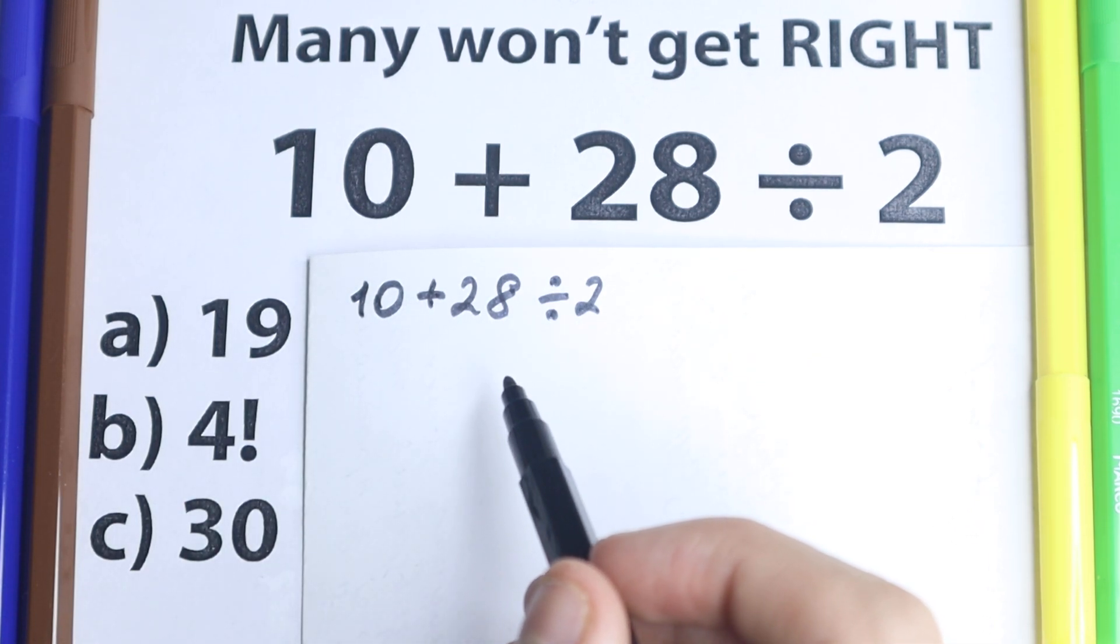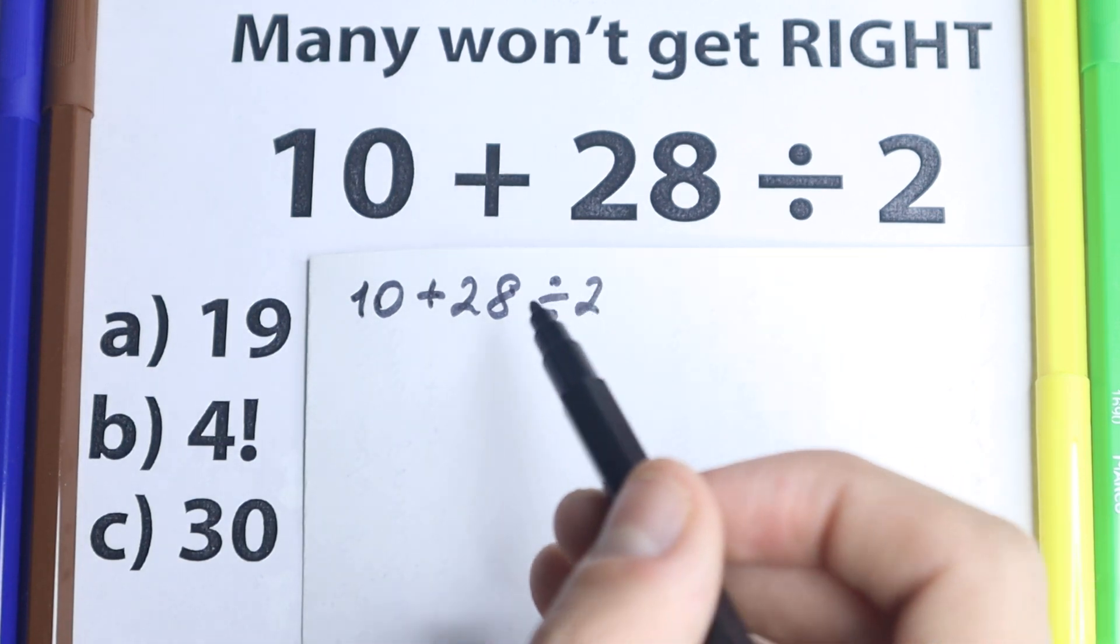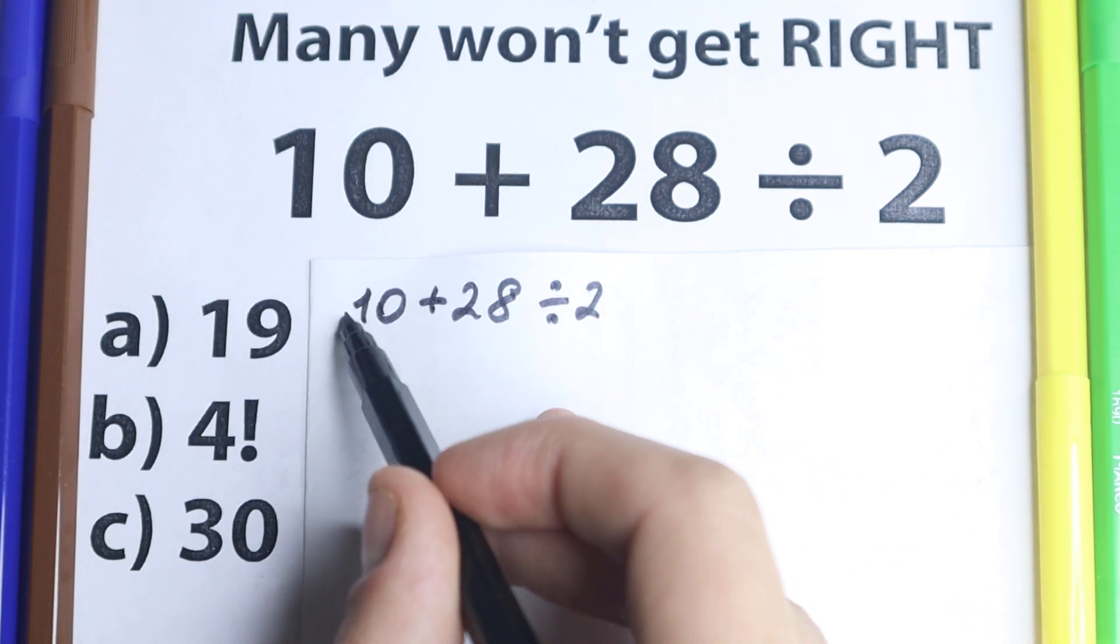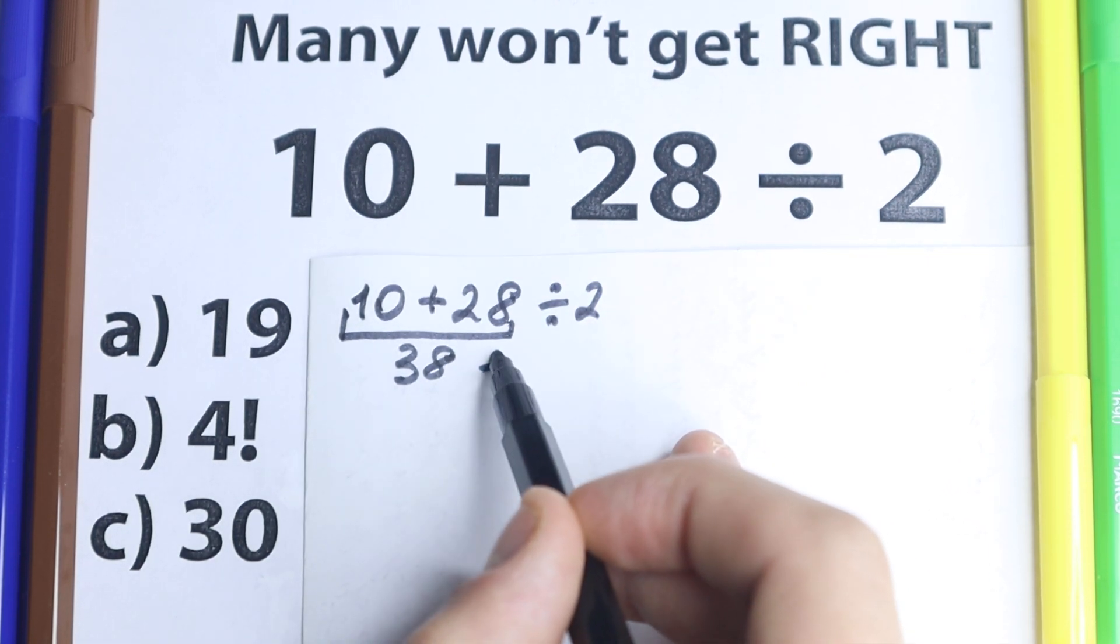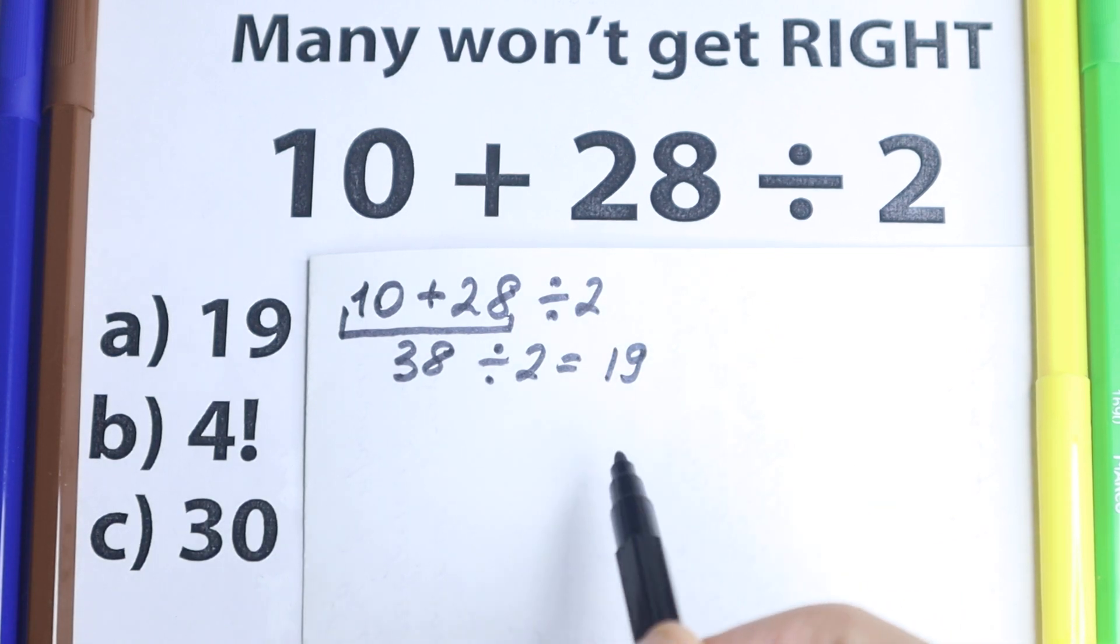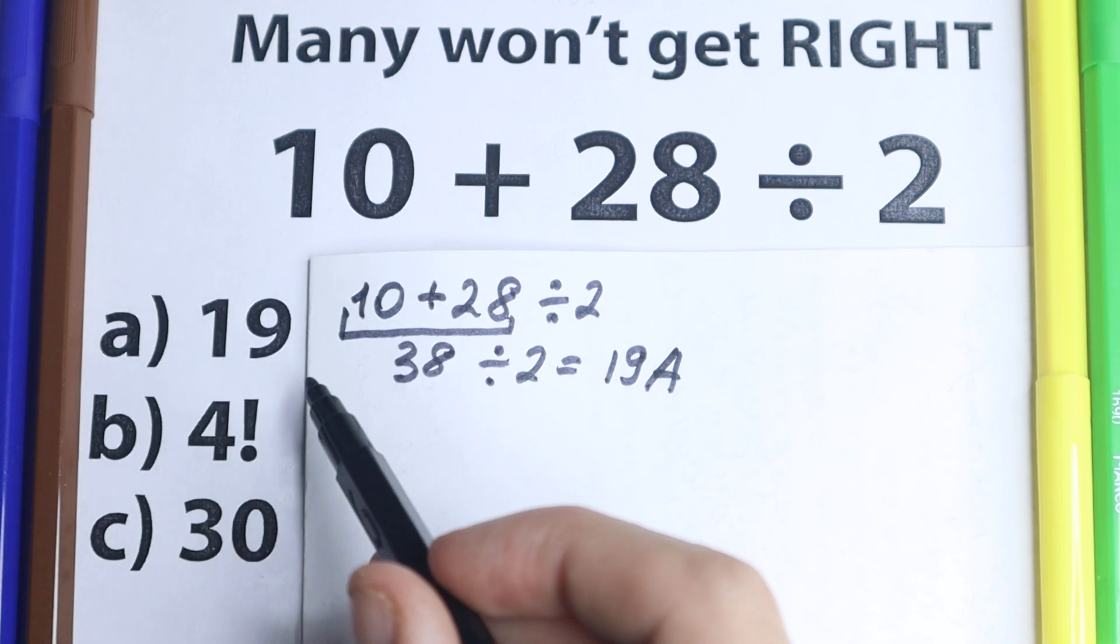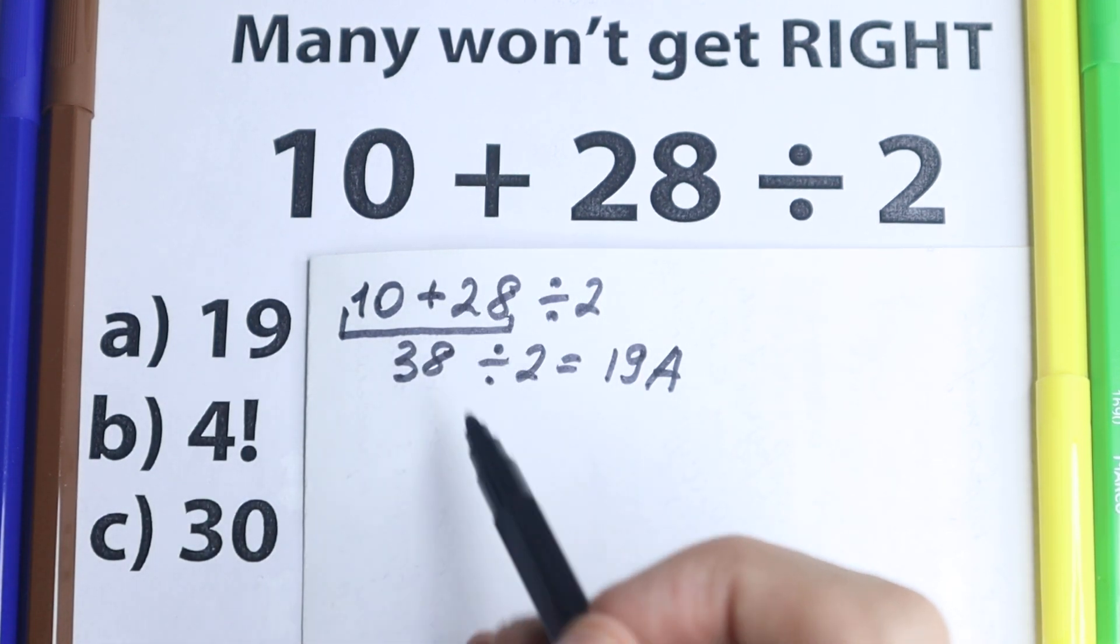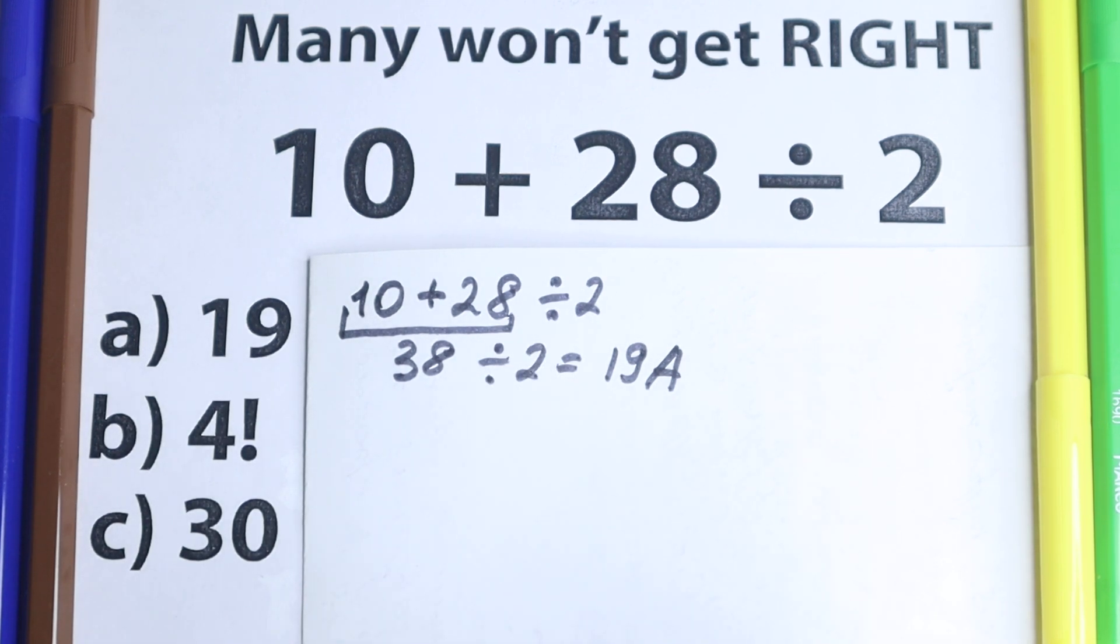But before solving this I'm going to show you this PEMDAS order of operation. We have this obvious solution right here: 10 plus 28 equal to 38 and we have this division, so divided by 2 equal to 19. And a lot of students say okay we have 19 right here, this is the obvious solution. This is the first option of course right here, the obvious solution with this addition. So option A is correct and they go to the next question.